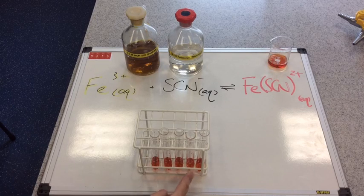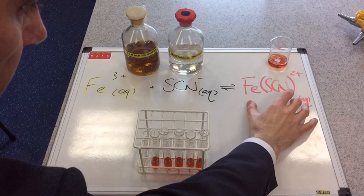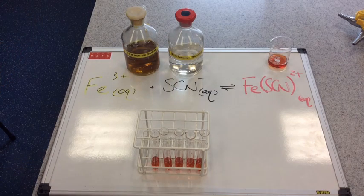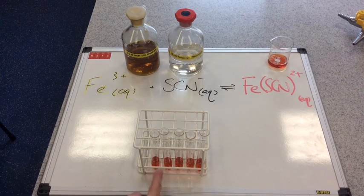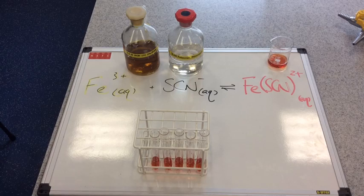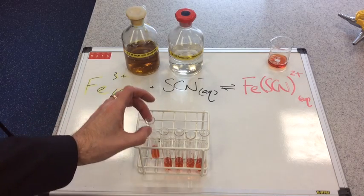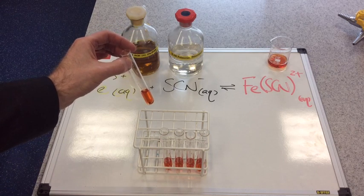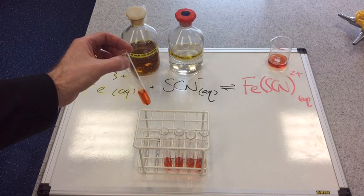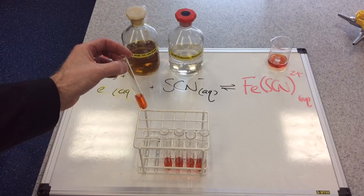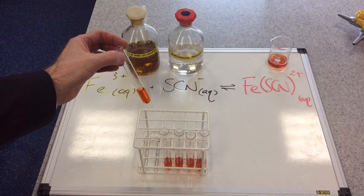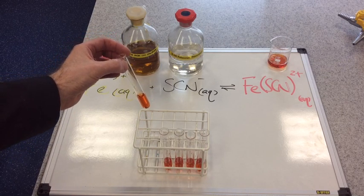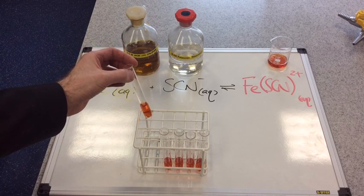I've taken some of the orangey red colored solution out and I've split it into five test tubes. I've tried to get the same amount in each test tube. I'm going to put one to one side because I'm going to use this test tube as my control. I'm not going to change anything about this one. And we're going to use this to see what has happened to the position of the equilibrium.